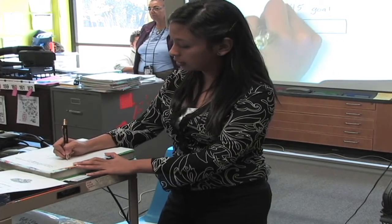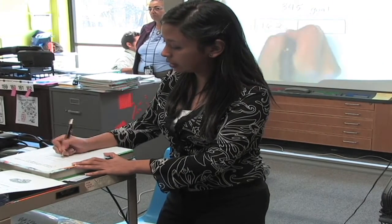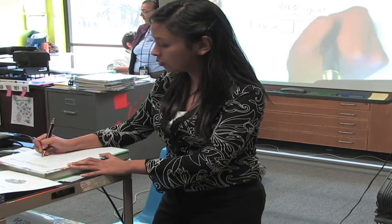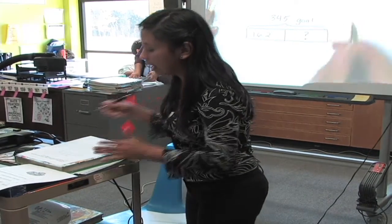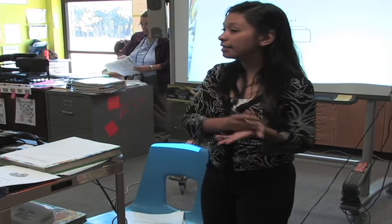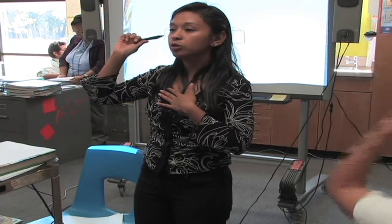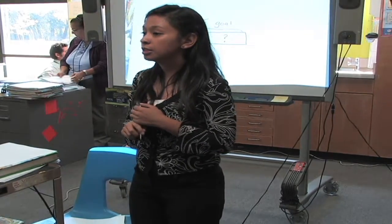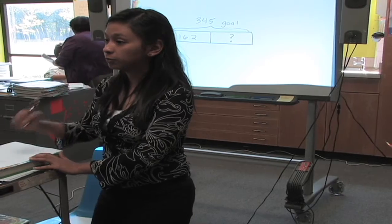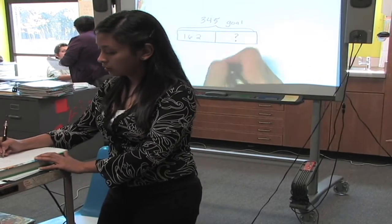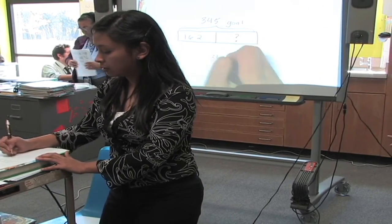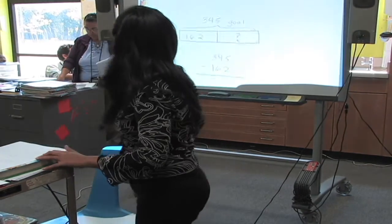The goal was 345 pairs. How many pairs did they sell? 162. So this is what they sold and this was the goal, and this is what we need to know: how many pairs of shoes did they not sell? So what operation are we using here? Alejandra? The difference. So tell me how you would write it down. 345 minus 162. Good job.